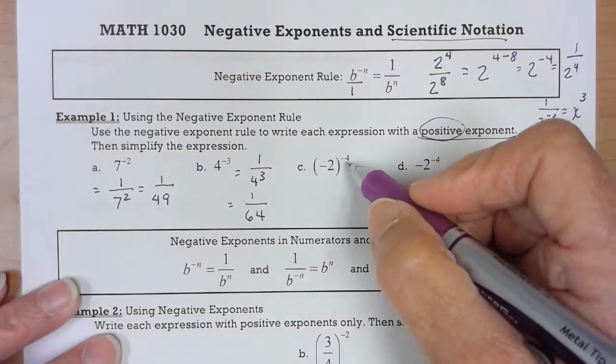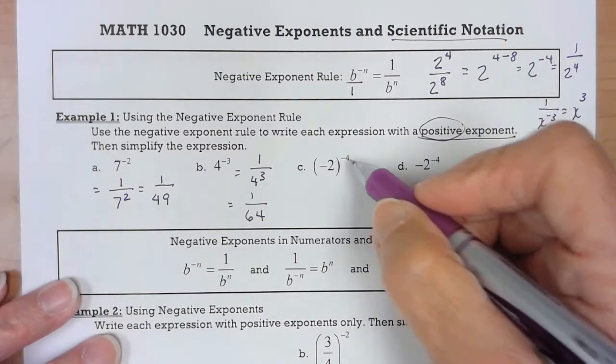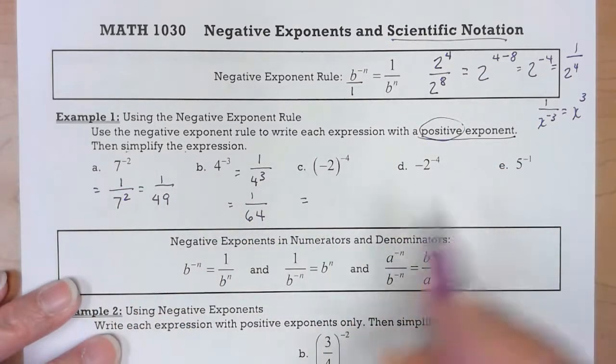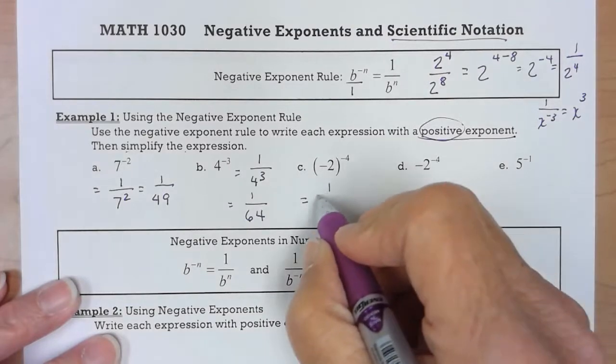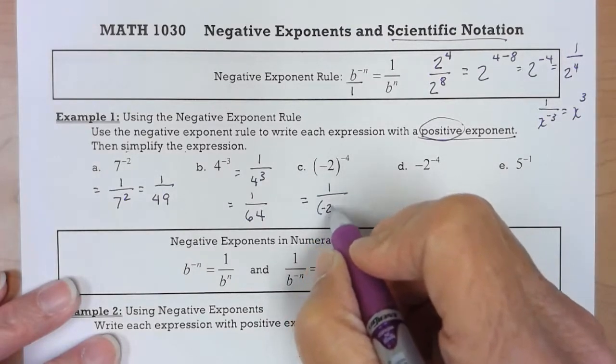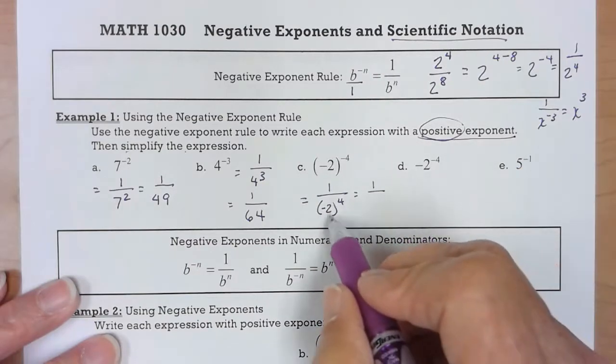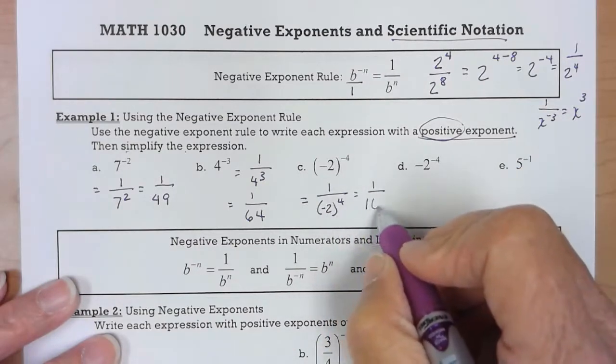First thing you need to do is get rid of the negative exponent because you simplify the expression after that. So this would be 1 over negative 2 to the fourth and that would give me 1 over positive 16.